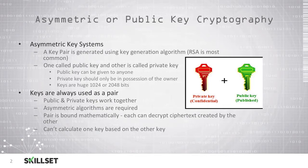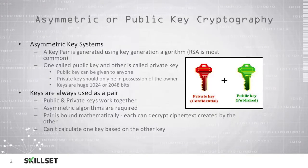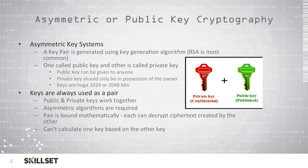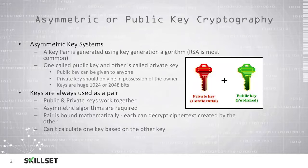The key sizes are very large — either 1024 bits or 2048 bits — compared to the 256-bit keys used with AES symmetric encryption. We always use the keys as a pair, so the public and private keys work together. The keys are mathematically related, so something encrypted with one key can be decrypted with the other key. However, it is not possible to determine the public key by having the private key, and it is not possible to determine the private key by having the public key.